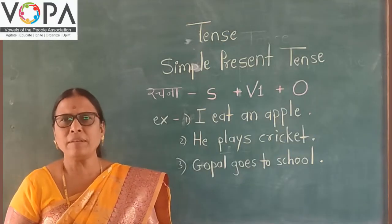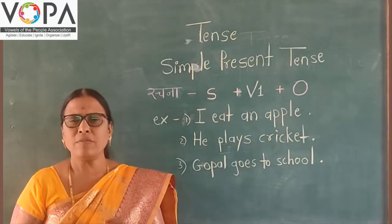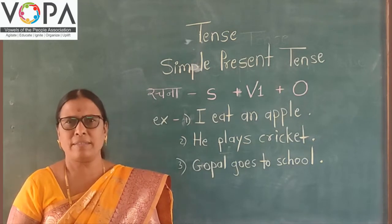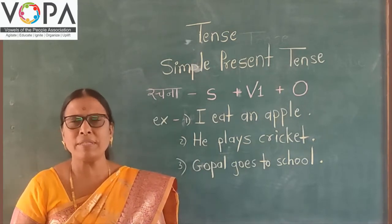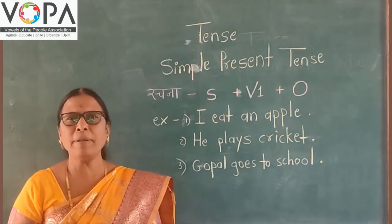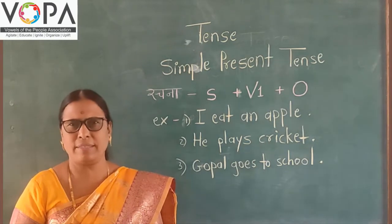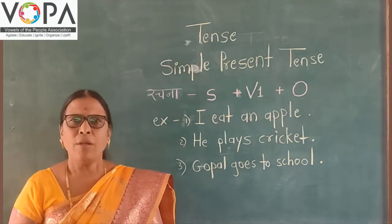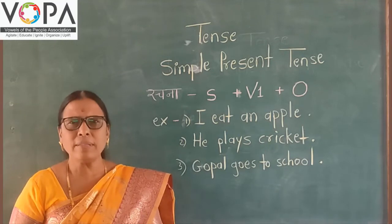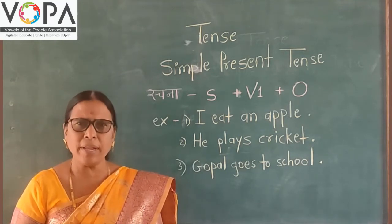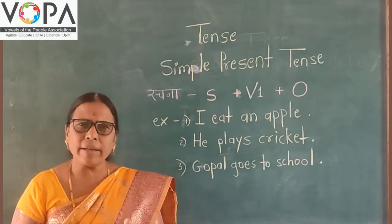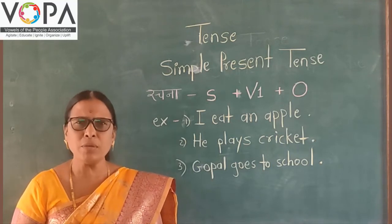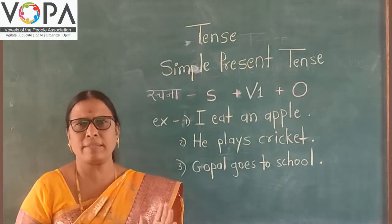Today we learn the four kinds of present tense. The first kind of present tense is simple present tense. Manje saada vata manka. When the things happen every day, every year, again and again — that's the time we use simple present tense.